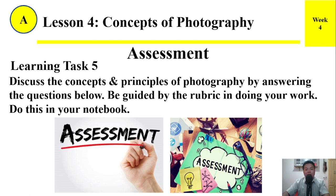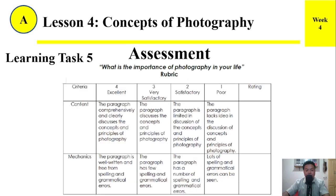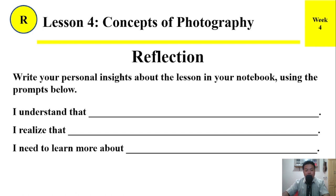Assessment — Learning Task Number Five: Discuss the concepts and principles of photography by answering the questions below. Be guided by the rubric in doing your work. Do this in your notebook. The question is: What is the importance of photography in your life? The rubric criteria: four for excellence, three for very satisfactory, two for satisfactory, and one. Rate your work for content and mechanics.